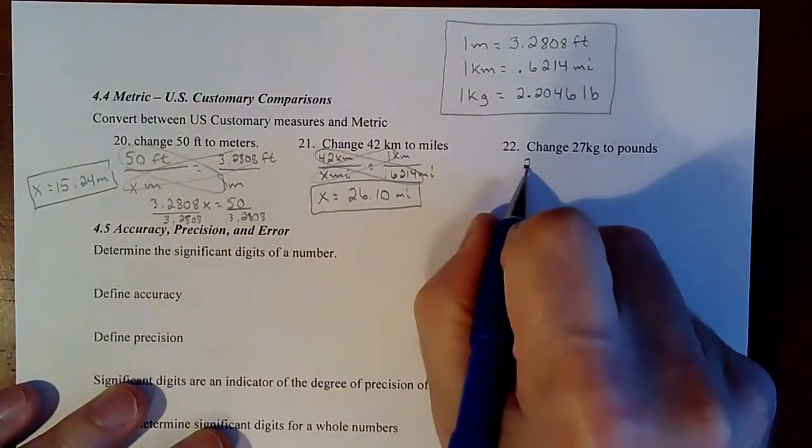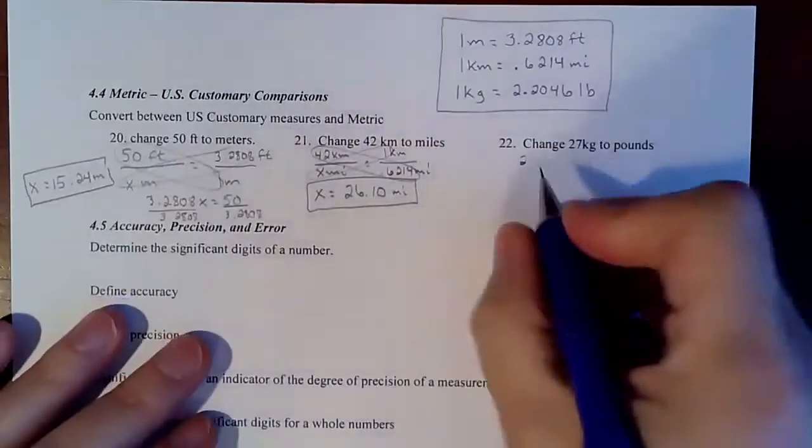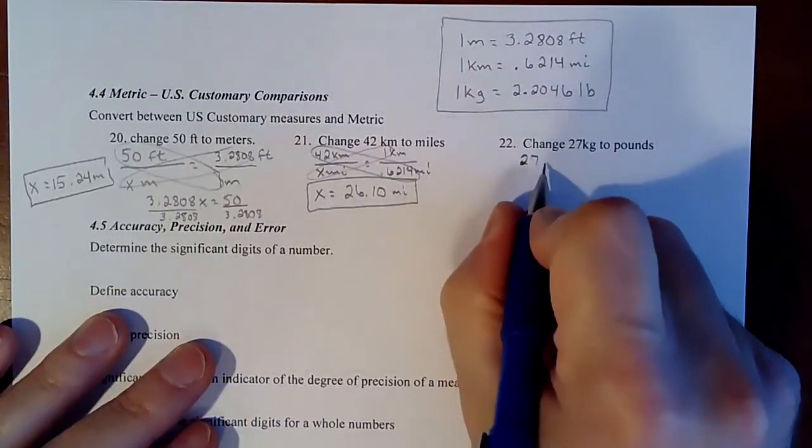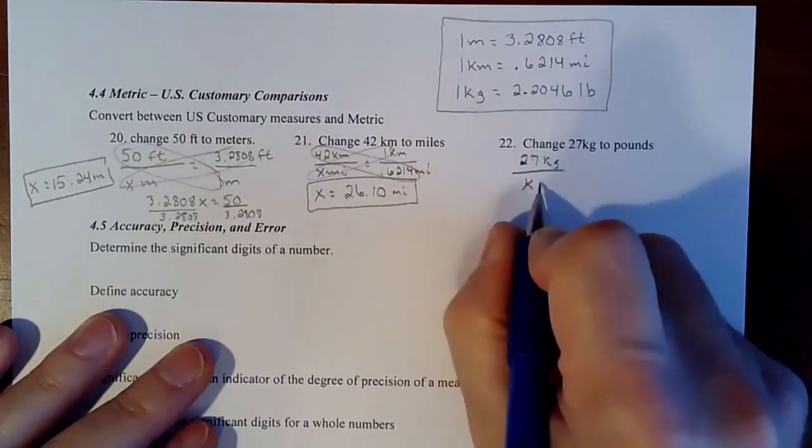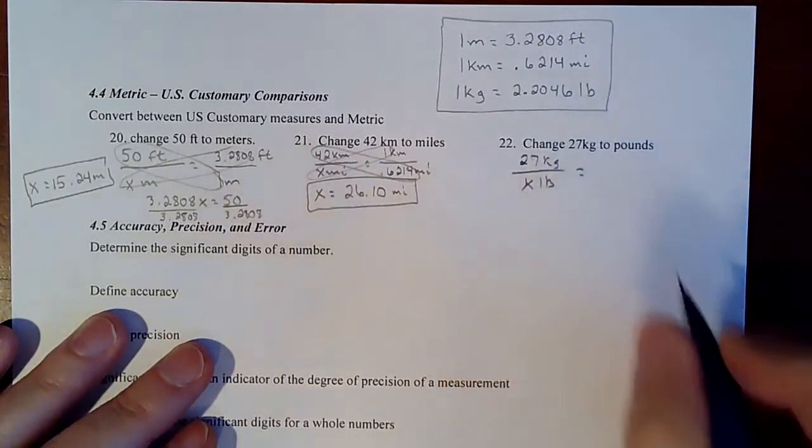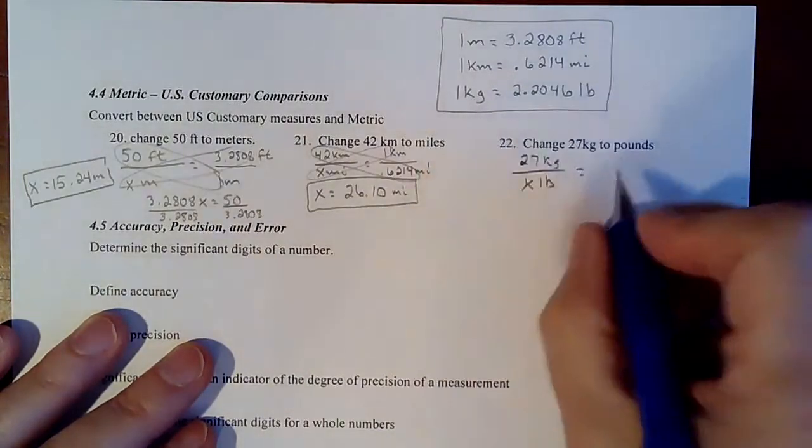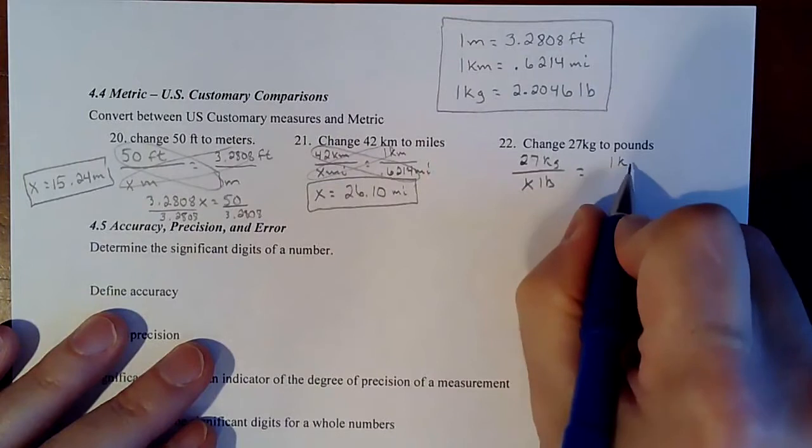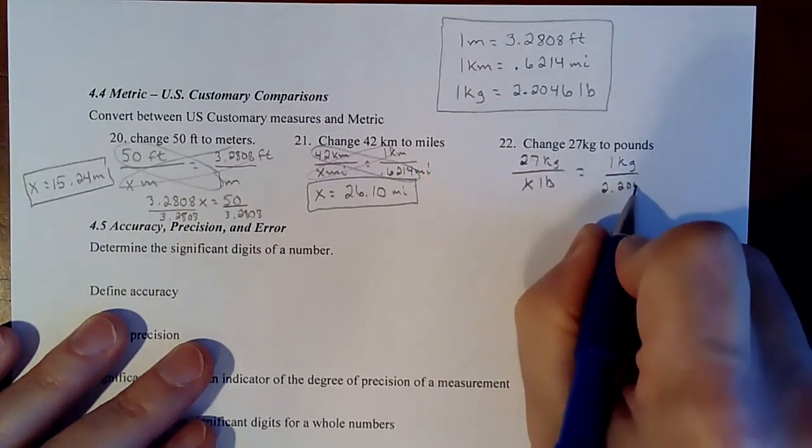And then we got one more. Same thing. We got 27 kilograms. So we don't know how many pounds, get that right this time. Third time's the charm. And then we got one kilogram is equal to 2.2046.